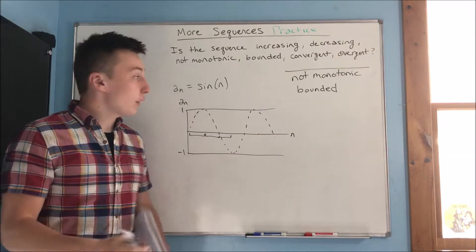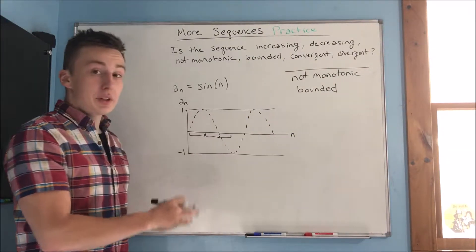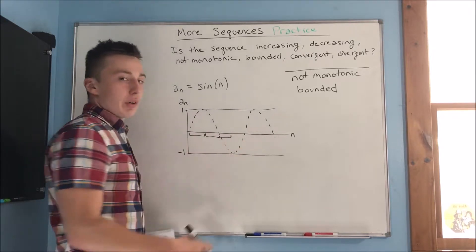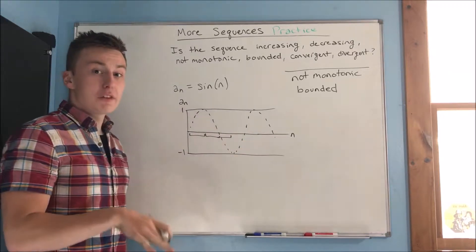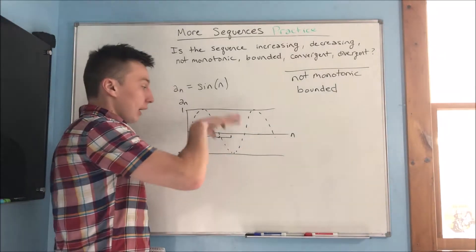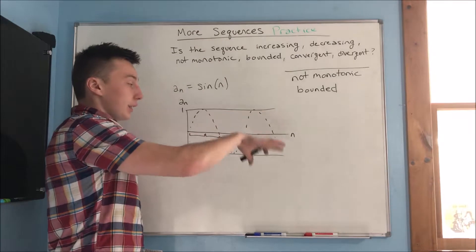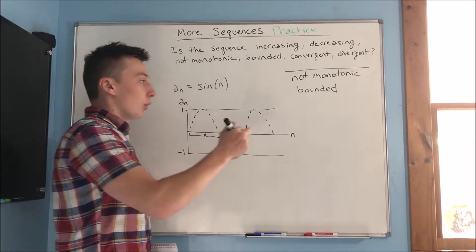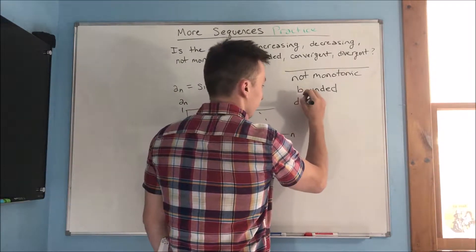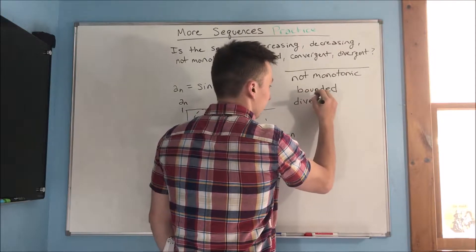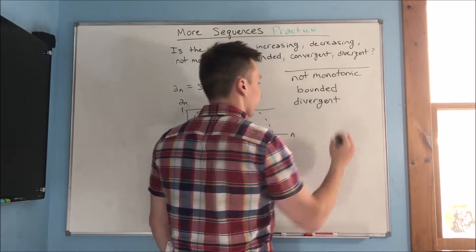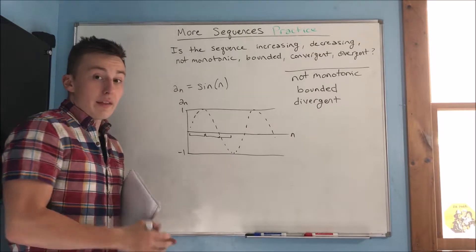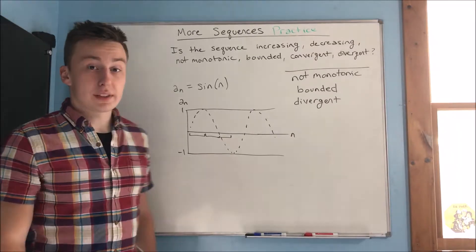Lastly, this sequence is divergent because it's just oscillating forever — it's never converging to anything. It's not monotonic; it's just going to keep bouncing back and forth between one and negative one. So it is divergent, and that does it for our first example.